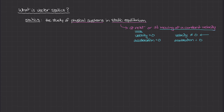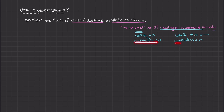In both subdefinitions — something at rest or something moving at constant velocity — there is a difference in velocity. In the first case, velocity is zero; in the second case, it's not zero. However, the acceleration is zero for both cases. The most important takeaway is that when we study systems in static equilibrium, the acceleration is always equal to zero. That's what defines statics and what defines a physical system to be in static equilibrium.